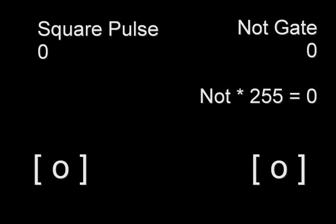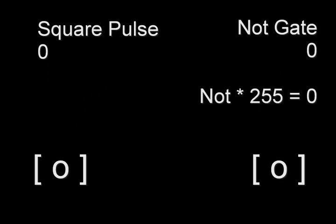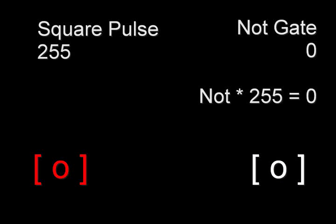We started out with both lights off, but when we pressed the button our lights started alternating. That's because as the square pulse outputs zero, the NOT gate becomes one, and one is multiplied by 255, which is sent to the blue light. And they alternate this way.